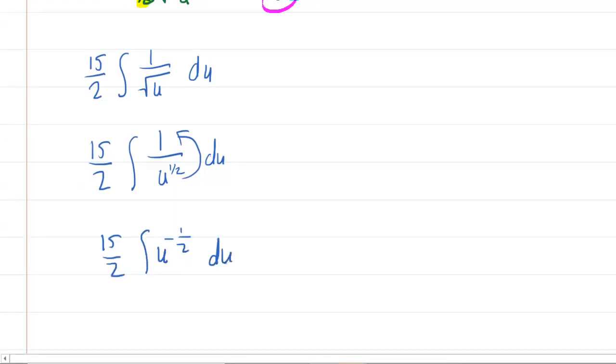It's a basic power rule of integration. We'll add 1 to the exponent, it becomes u to the positive half, then divide by the new exponent. Rather than dividing by the exponent, we'll multiply by its reciprocal, which is a good idea when you have a fraction involved. So multiplying by the reciprocal, we'll put a 2 right here. Don't forget you're still multiplying by the constant we factored out, the 15 halves. Those 2s will cancel, so now you simply have 15u to the 1 half plus c.